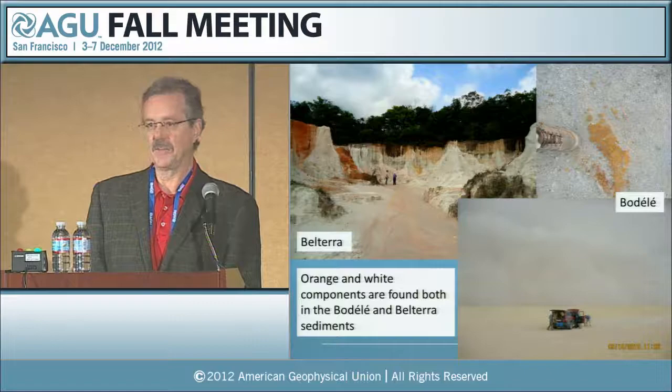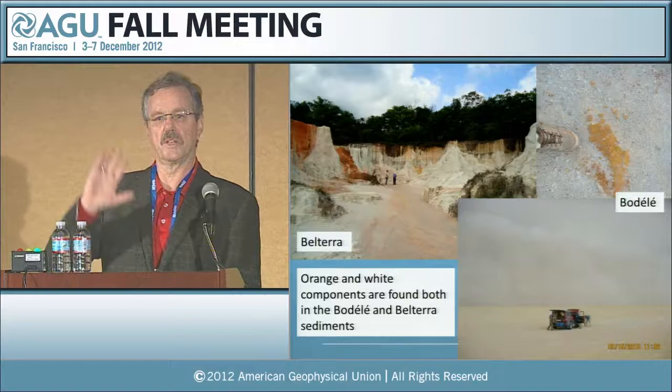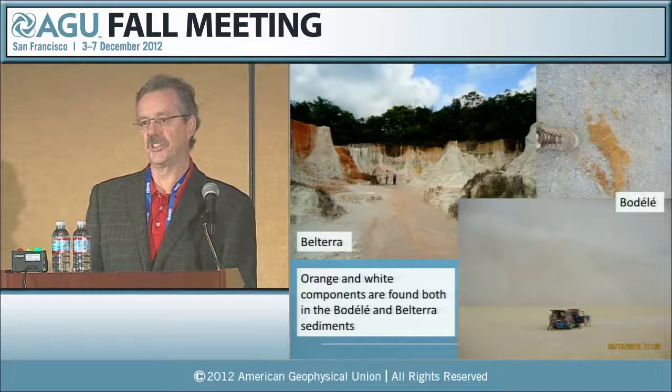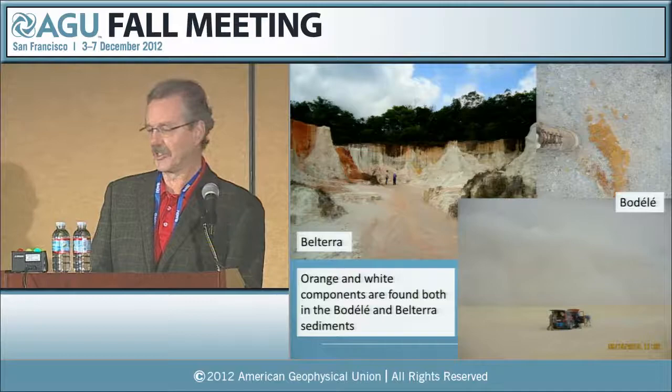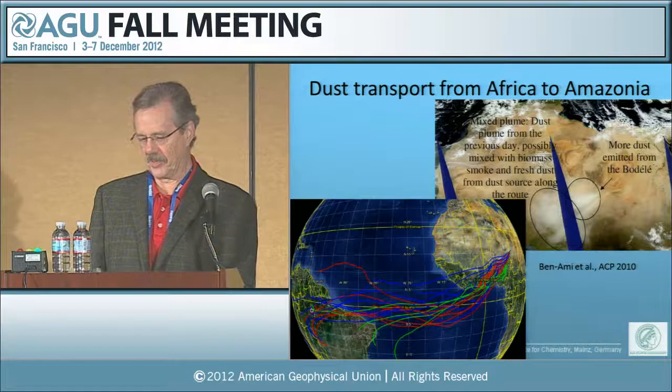To examine this, we went to outcrops on both sides of the continent, took samples. One set are cliffs of orange and white materials found along the road going north from Manaus in the middle of the Amazon. The other side is a dust storm in the Baudelaire Depression in Chad, Africa. If you look at the ground, most of it is whitish-gray material, and this haboob is also whitish-gray, though there is also orange material. So at least visually, these things look quite similar.